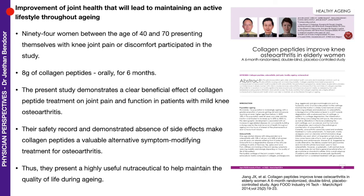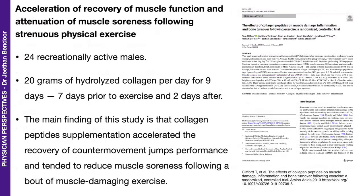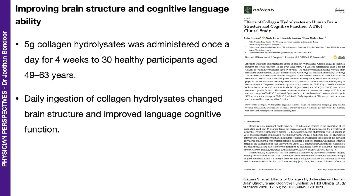A study on joint health and maintaining an active lifestyle during aging used 8 grams of collagen peptides orally for 6 months, reporting that the nutraceutical helped maintain quality of life. A 2019 paper on acceleration of recovery of muscle function and attenuation of muscle soreness used 20 grams of hydrolyzed collagen per day for 9 days — 7 days prior to exercise and 2 days after — with performance improvement reported. A 2020 study on improving brain structure and cognitive language ability in participants aged 49–63 used 5 grams of collagen once daily for 4 weeks.